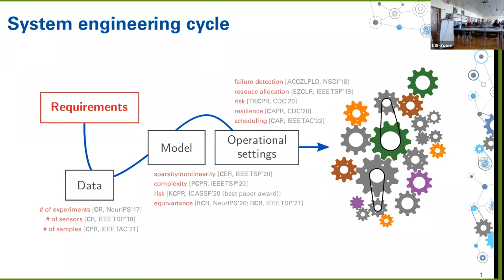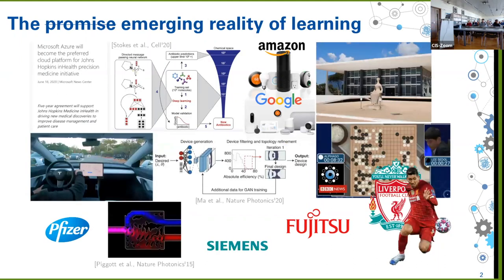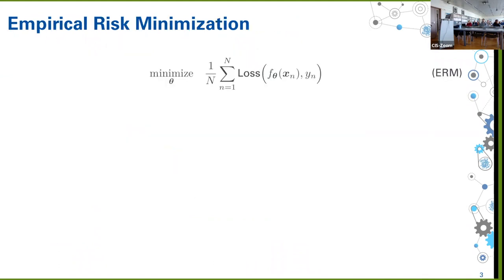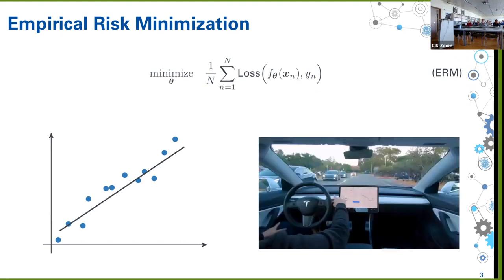The issue with this cycle is that as systems become larger and more complex, it becomes more costly and intricate to iterate. The promise of learning in this context is to take us from data to optimization to operation with little to no human interaction. That promise has become an emerging reality as learning becomes a core technology underlying applications from healthcare all the way to photonics research. Behind a lot of these successes is empirical risk minimization, or ERM — an optimization problem that fits models by minimizing average loss over samples.